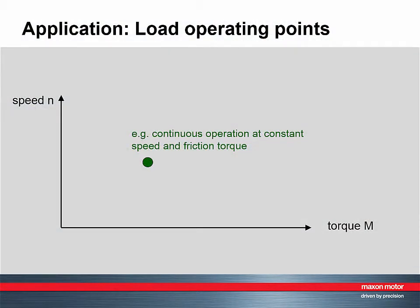The starting point for motor selection is the motion of the load in the application. The necessary operation cycles, speed profiles and friction result in speed and torque requirements the motor has to fulfill. In case of mechanical transformation — think of gears and screws — the values at the load have to be converted to the motor output shaft. In our standard diagram with motor speed as a function of torque, this can be represented as points of operation.